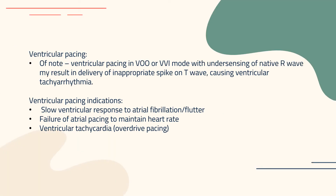For ventricular pacing, ventricular pacing in VOO or VVI mode with under-sensing of the native R wave may result in delivery of an inappropriate spike on the T wave, causing ventricular tachyarrhythmia. This can be a very serious issue. We need to understand all settings and what we're doing when changing them to make sure negative consequences don't occur. Ventricular pacing indications include slow ventricular response to atrial fibrillation or flutter, failure of atrial pacing to maintain heart rate, and ventricular tachycardia overdrive pacing.